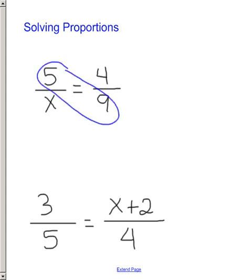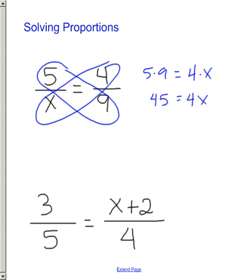You're going to multiply 5 times 9, and then that has to equal the other side. So that has to equal 4 times x. So what this means is you're just going to do 5 times 9 is 45. That equals 4x. So you end up just having to divide by 4. So that leaves you with the x over here.